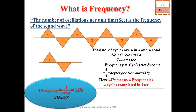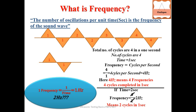Agar time two seconds ho aur four cycles complete hon, toh frequency = four cycles divided by two seconds = two hertz. Frequency ko hamesha per second mein express karte hain. Toh one second mein do cycles hue, isliye frequency = two hertz. Frequency tally ho jaati hai.